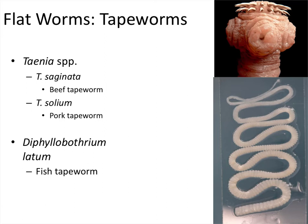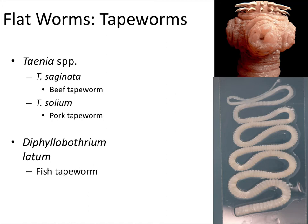There are three main tapeworms we're concerned with. Two are in the genus Taenia — note this is different from the fungal genus we discussed previously. The first is T. saginata, the beef tapeworm, and the second is T. solium, the pork tapeworm. They are primarily transmitted either through the fecal-oral route or by eating undercooked meat. If someone ingests eggs, larvae, or a whole worm, it burrows into usually the large intestine — sometimes the small intestine — sticks in with its barbs, absorbs nutrients from the host, and reproduces. That's its whole life.